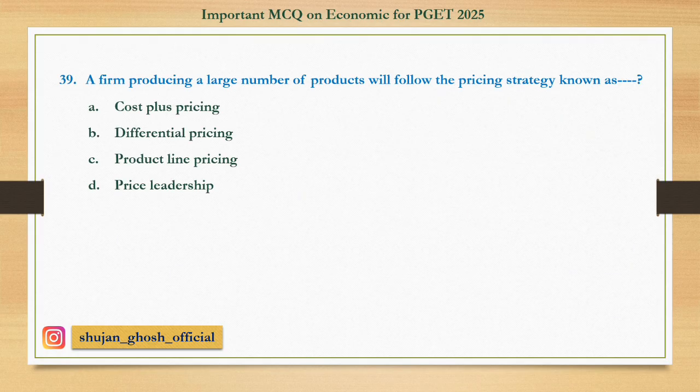Question number thirty-nine: A firm producing a large number of products will follow a pricing strategy known as — option A: cost-plus pricing; B: differential pricing; C: product line pricing; D: price leadership. Answer: price leadership.